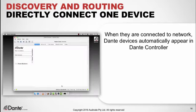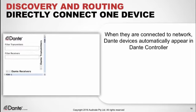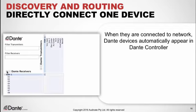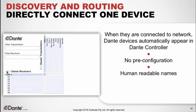When we connect a Dante device directly to our computer, the device simply appears. This brings up a key point about Dante: all devices are self-discovering without pre-configuration. Note also that the device shown here has human-readable names — we can adjust that name plus the names of the individual channels.